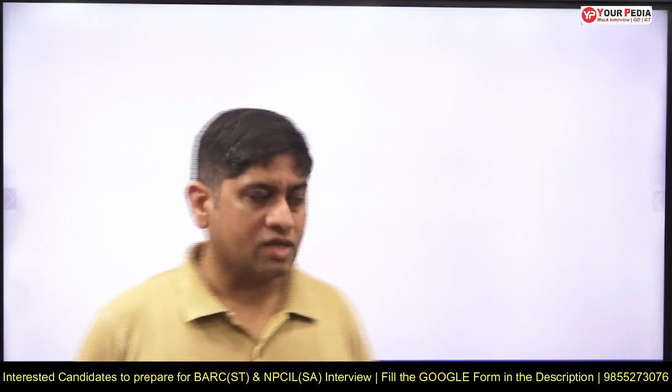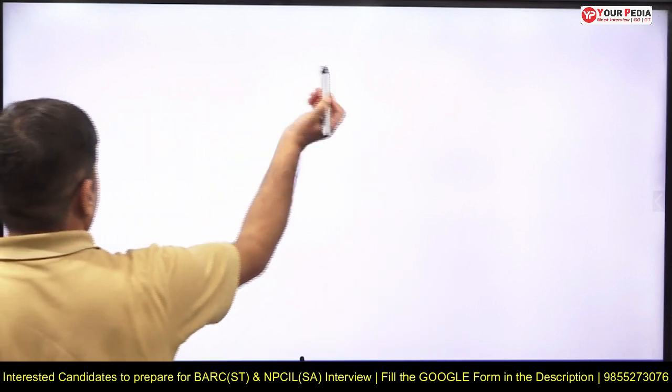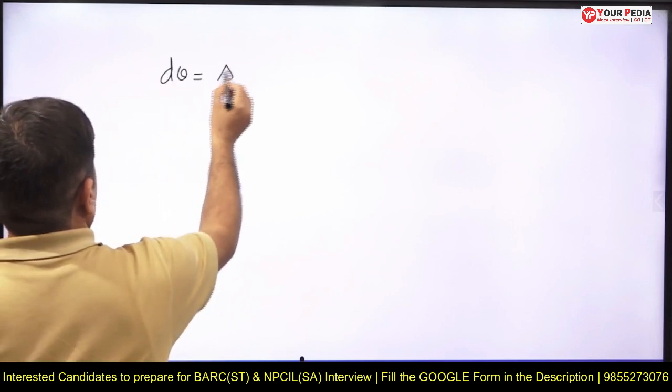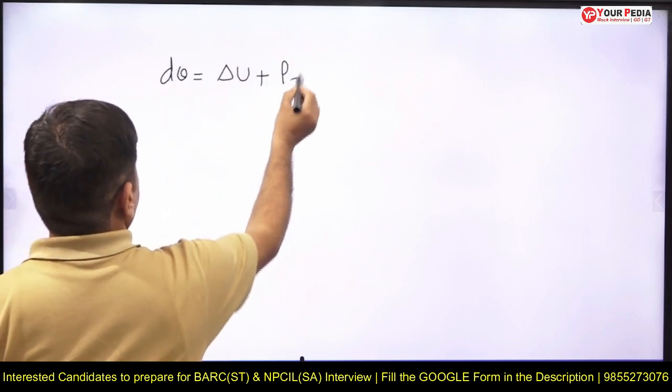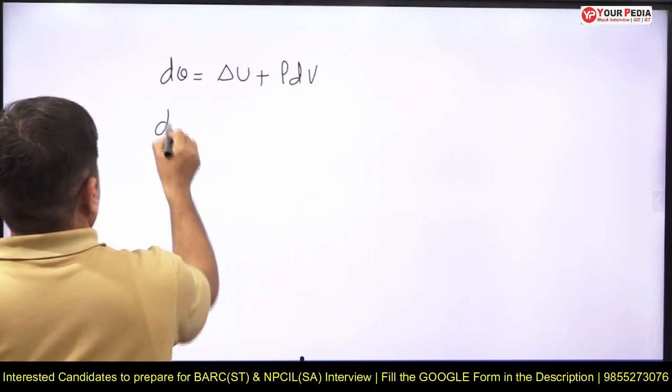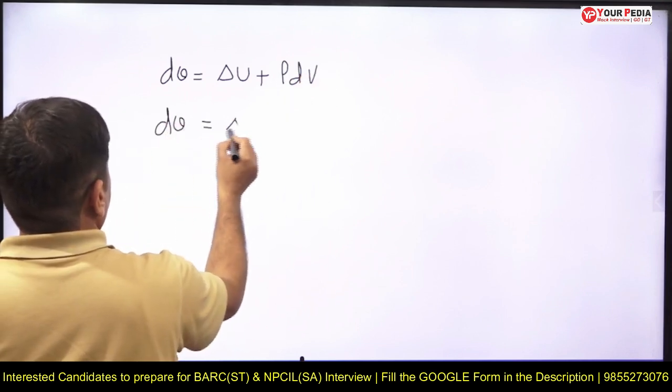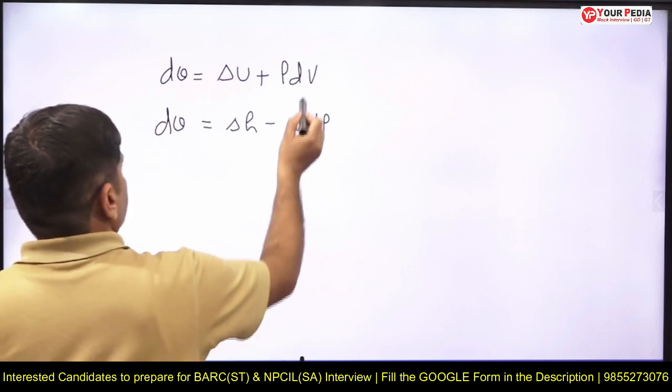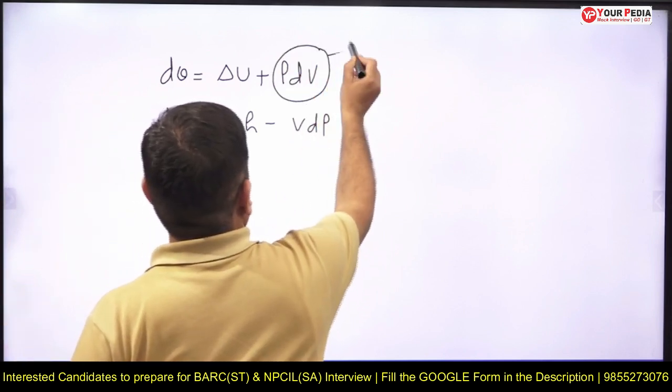From where does this derivation start? You know dQ equals delta U plus PdV, and dQ equals delta H minus VdP. You know this one is called displacement work.